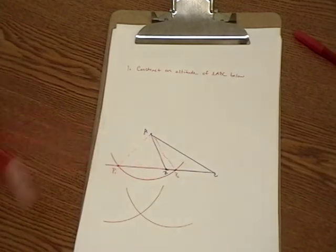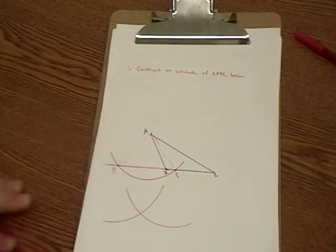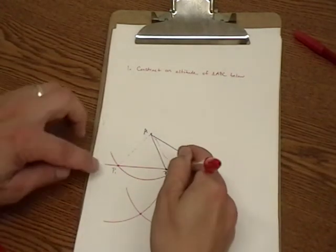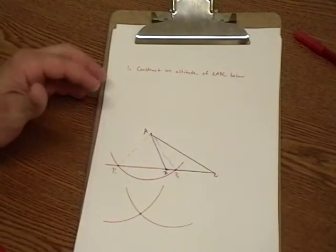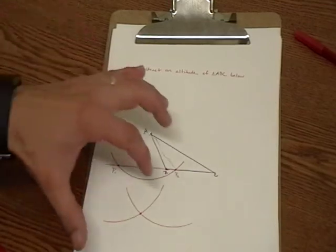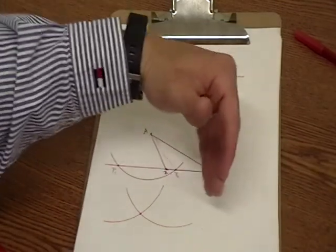By using the same radius, what ends up happening is this is exactly the same distance between these two points. If you use a different radius, a smaller radius, it'll shift more this way. So you want the one that's exactly the same.